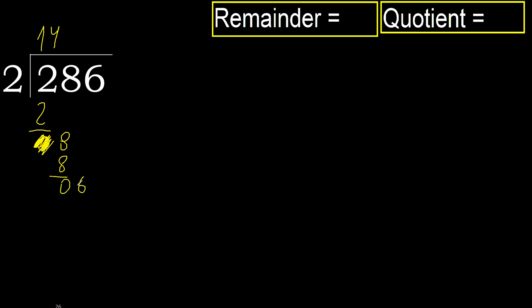Next, bring down 6. 2 multiplied by 4 is 8, which is greater. 2 multiplied by 3 is 6, which is not greater. Ok, subtract.